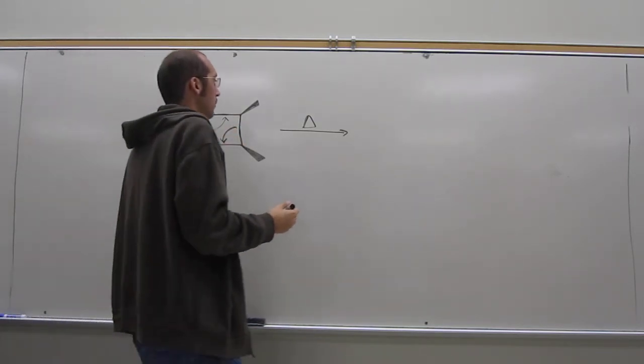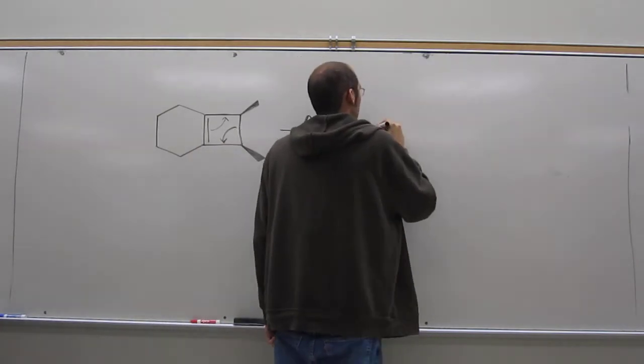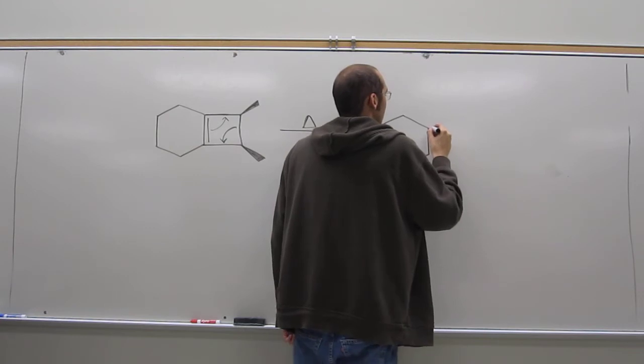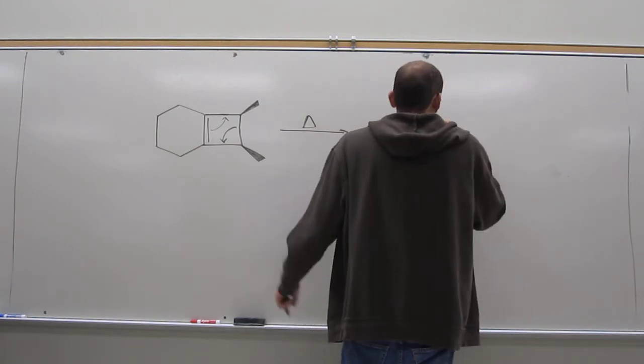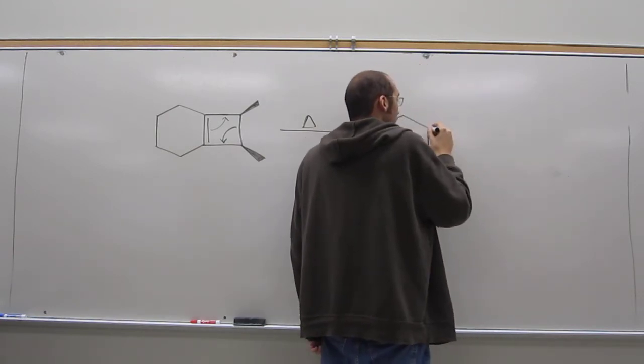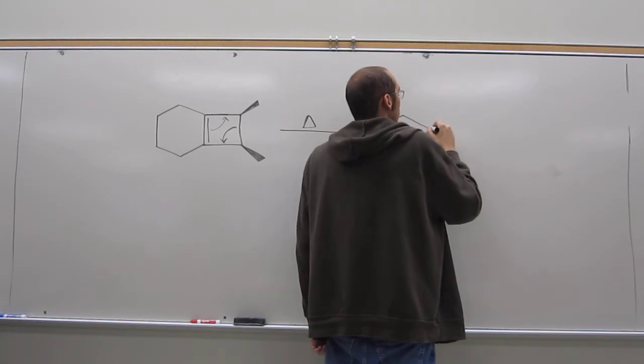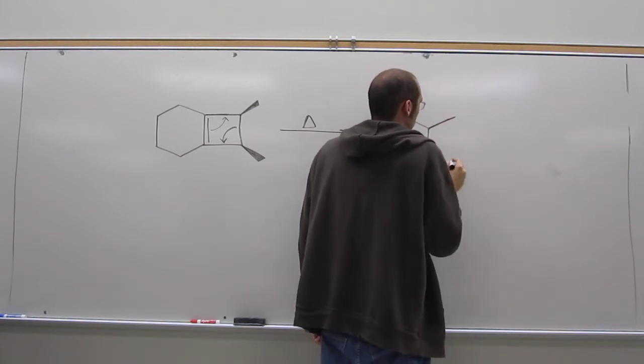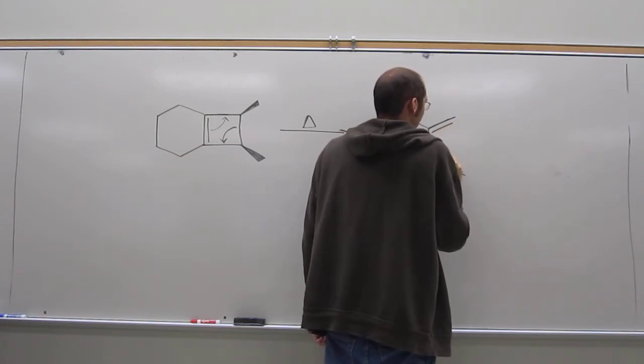And again, just like we did last time, those two rings are going to stay together. But now, we're going to make what type of molecule? A diene. A diene, very good.